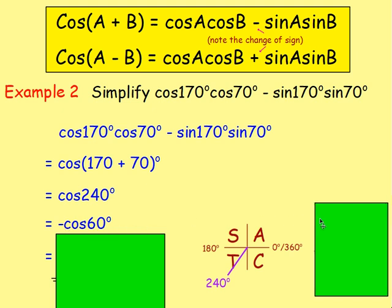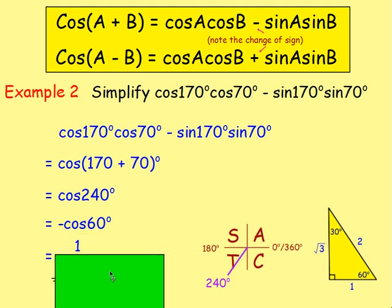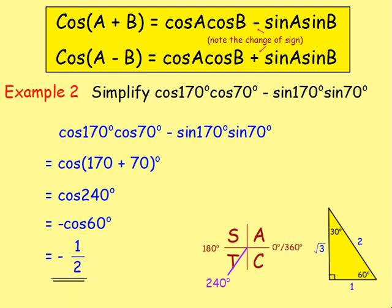From there, you can work out cos 60 using your exact value triangles. If you're unsure about this part, just look back to the trig chapter with exact values. Cos of 60 would be a half. So that's the same as negative one half — and that's your answer.